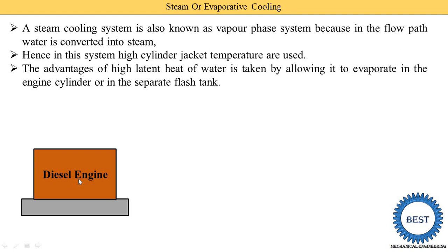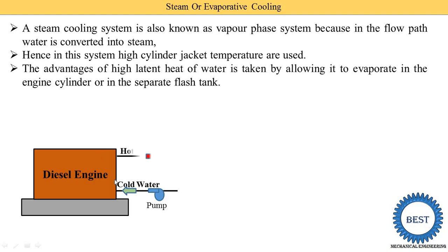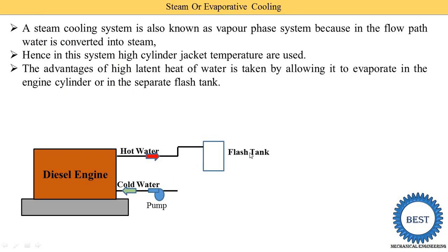Here you can see this is the diesel engine in which we supply cold water using a pump. This cold water goes inside the water jacket, where its temperature rises and hot water or steam comes out, depending on conditions. This hot water is then supplied to the flash tank.